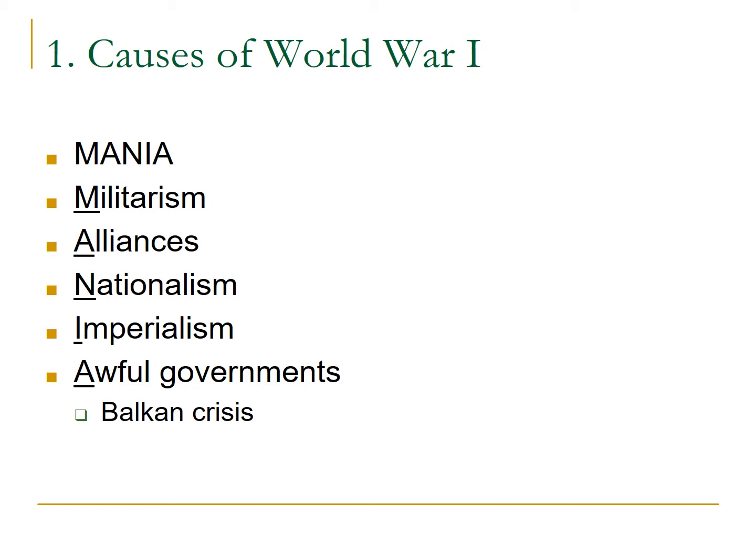Militarism was a byproduct of the Industrial Revolution with the buildup of new military technology, which also resulted in an arms race between ultimately Great Britain, on one side of the alliance systems, and Germany on the other side. The alliance systems themselves were part of this — they were designed initially to try to keep people out of war, but ultimately ended up pulling everyone in.